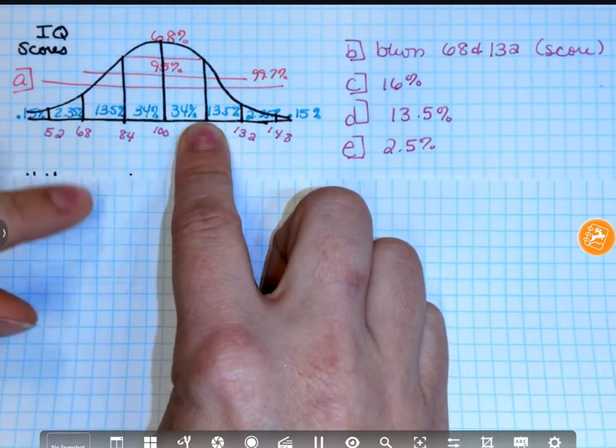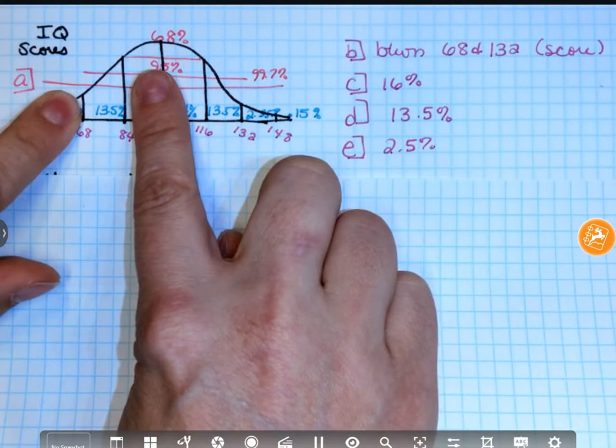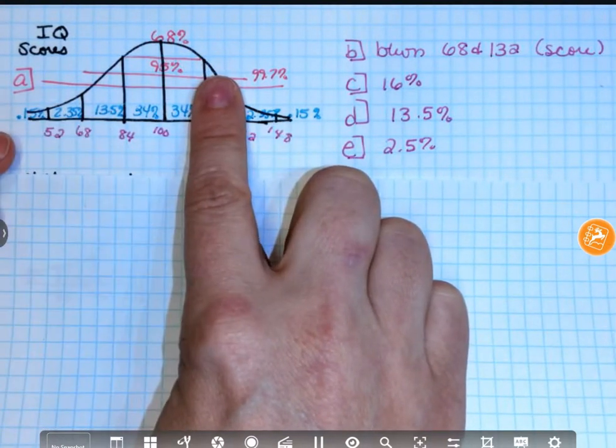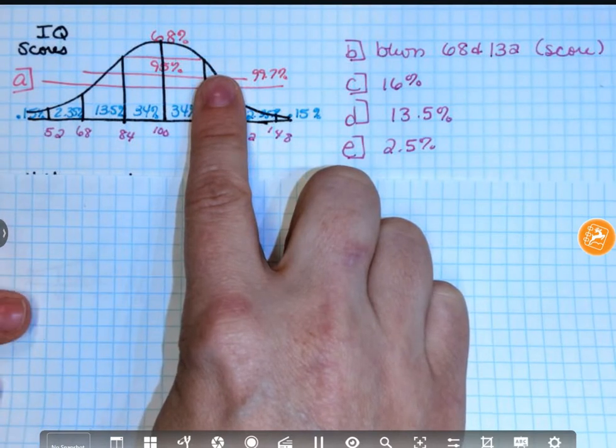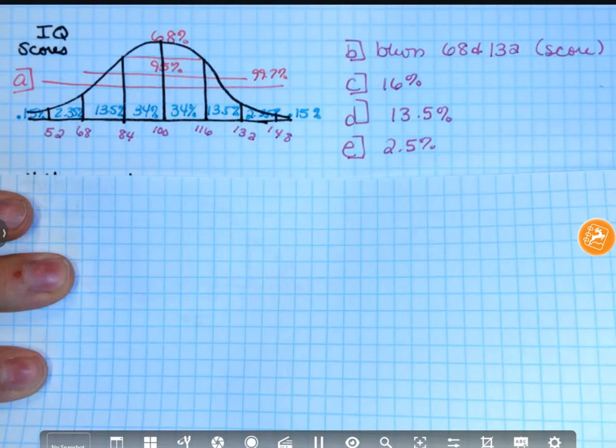And then it said, what percent are between 68 and 84? Boom. There's my answer. And above 132, add those two values up. Pretty straightforward. Any questions on the IQ score question?